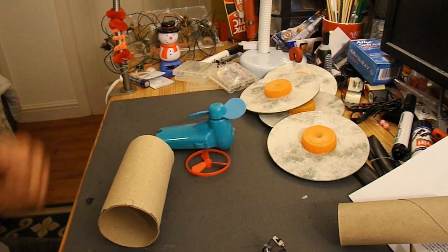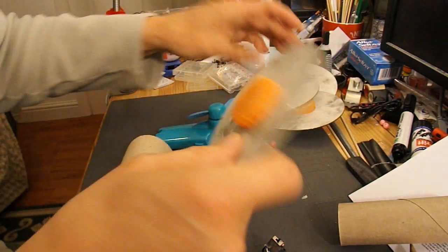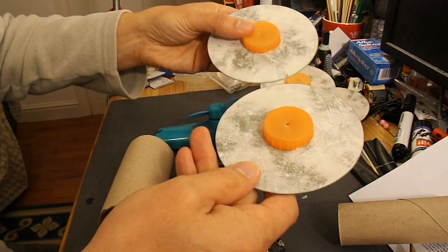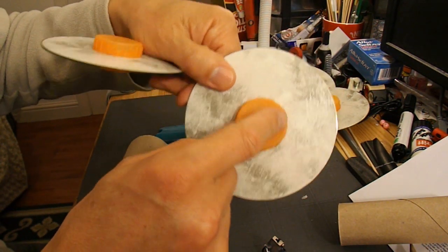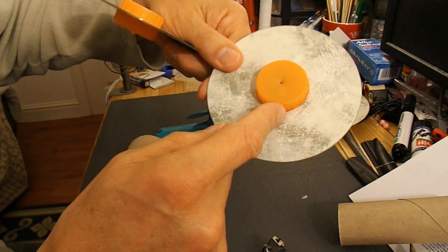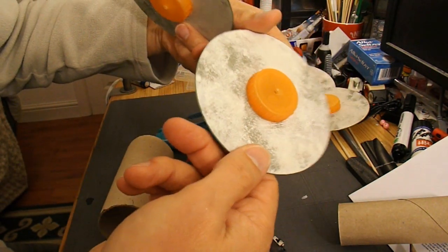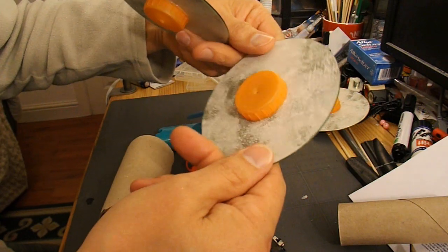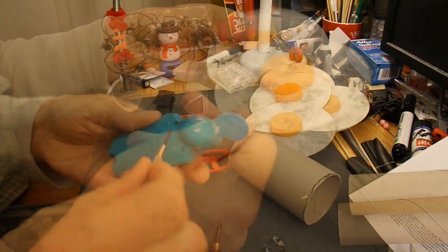To save some time, I've just taken the wheels off one of my other cars. So if you don't know how to make wheels out of CDs by sticking milk bottle tops on them, you'll have to have a look at some of my older videos. So there's our wheels.